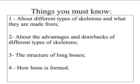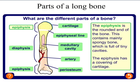Let's go back to our objectives of today's lesson. Hopefully you know about the three different types of skeletons — see if you can recall them and what they are made of. Think about those materials we just discussed, and about the advantages and drawbacks of the different types. We're now going to move on to the structure of the long bones and how bone is actually formed. We're about halfway through.